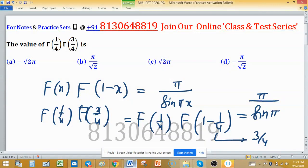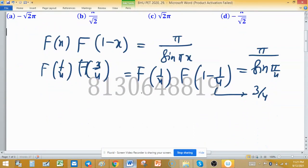So π upon sine π/4. The value is π divided by sine π/4, and sine π/4 equals 1 over root 2.